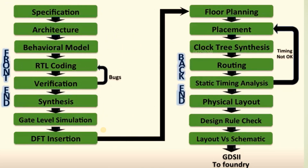This is a complete VLSI design flow, also called a complete ASIC design flow, or a complete RTL-to-GDS flow in VLSI. In Part 1, I had completely discussed the front-end design flow and all its stages one by one. Now it's time to discuss the back-end design flow, also called physical design flow. In this video I will concentrate on: floorplanning, placement, clock tree synthesis, routing, static timing analysis, physical layout, design rule check, layout versus schematic, and finally the GDS file.